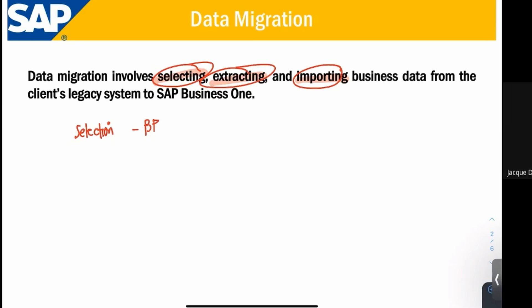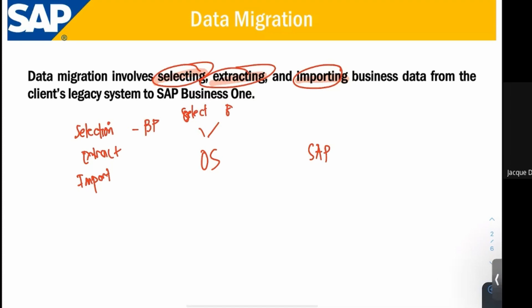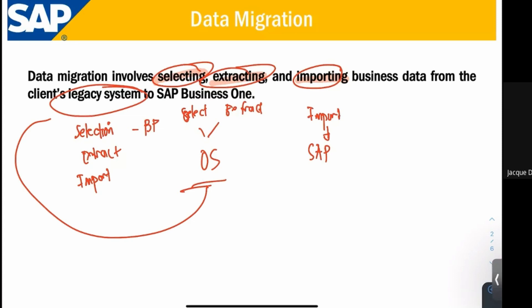Next, we extract. After we select that data, we extract it — meaning we get that data from the old system. After extracting, we will now import it to SAP Business One. So in your old system, the process is we select and extract, and in SAP Business One, we import that data. The old system is known as your legacy system.